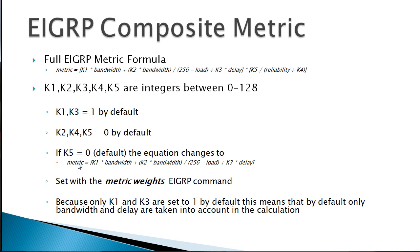That's going to be by default. Now if you want to go in and tweak these things, you don't have to set the K values to 1 or 0. Like I said, you can do it anywhere between 0 and 128. You can do that under the router EIGRP command prompt with the metric weights command. That's how you would set those different K values.